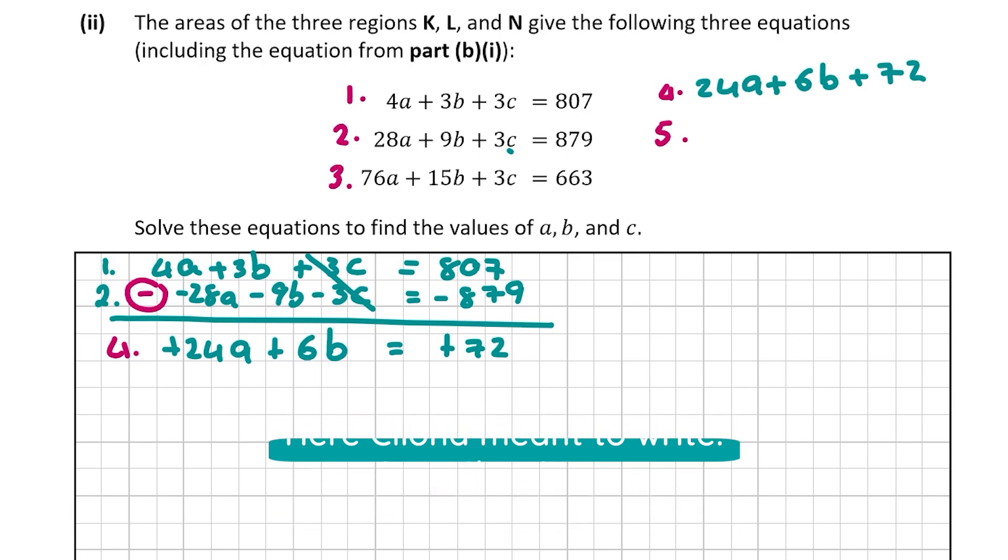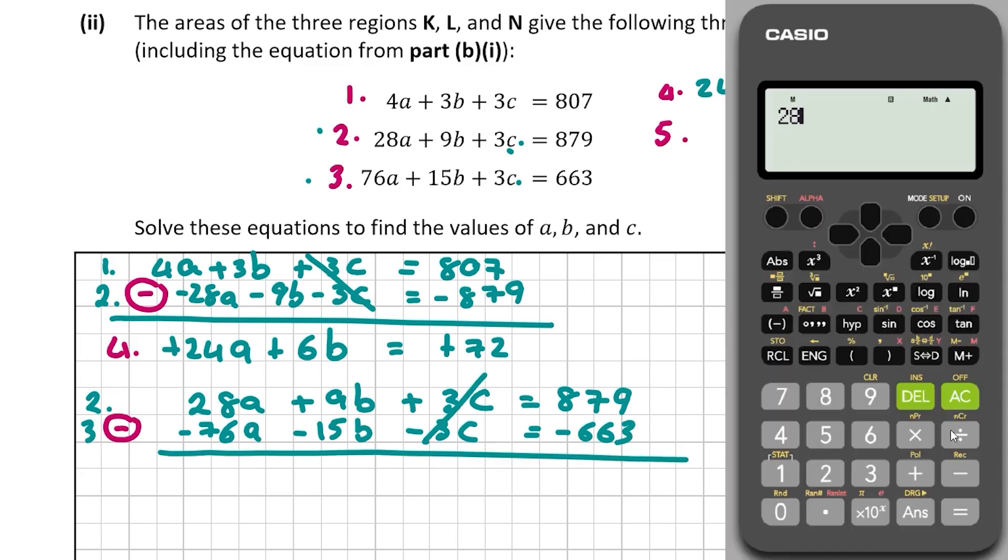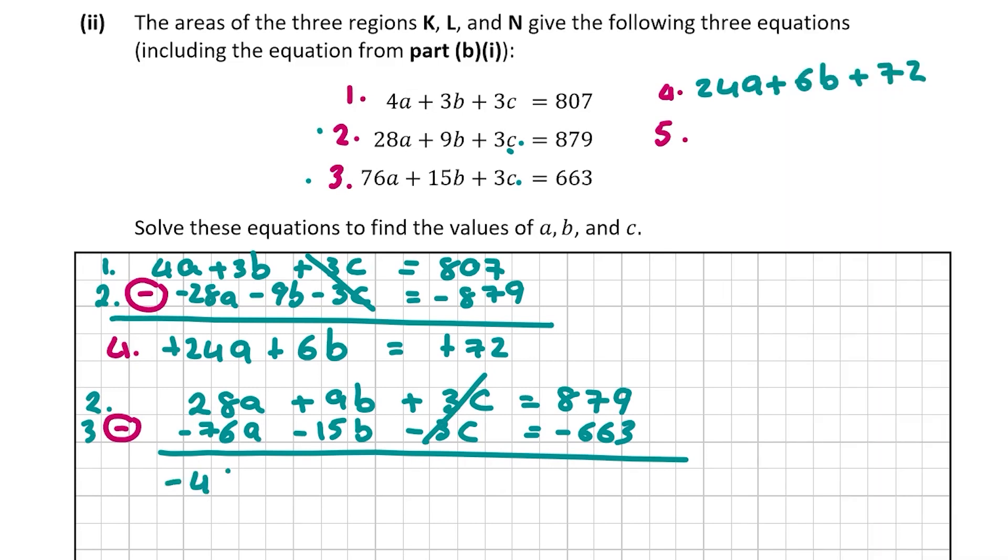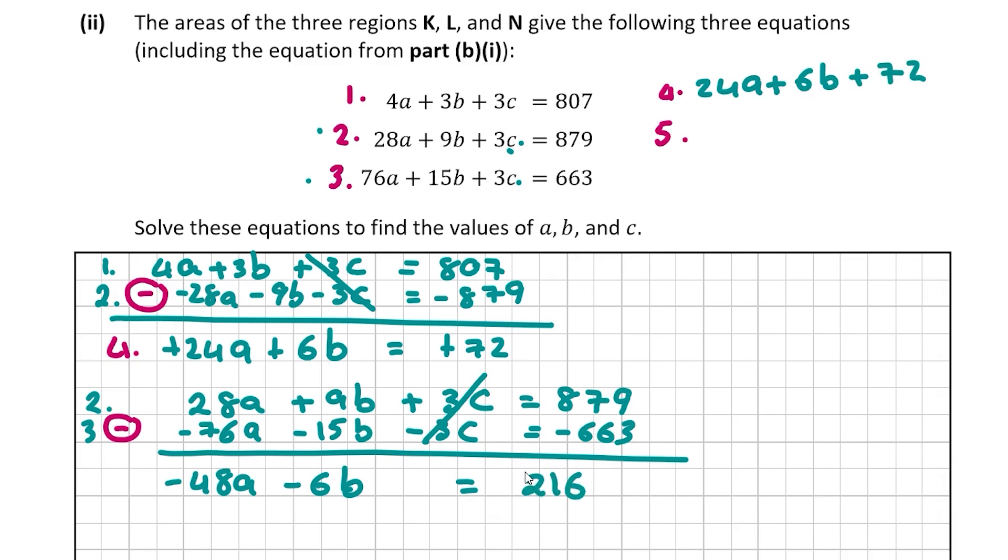Now to find the fifth equation, we're going to equate 2 and 3, and we're going to get rid of the C's as well. So 2: 28A + 9B + 3C = 879. Now 3, we're going to change the sign. So it's going to be -76A - 15B - 3C = -663. So we can get rid of our 3C's. 28 - 76 gives us -48A. 9 - 15 is -6B. So -6B = 879 - 663 = 216. So that is our fifth equation. I'm going to write it up here: -48A - 6B = 216.